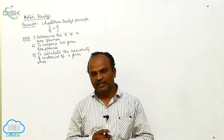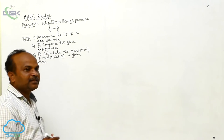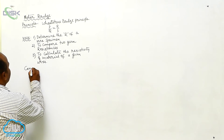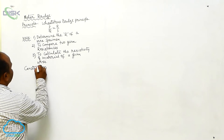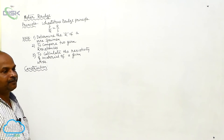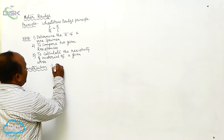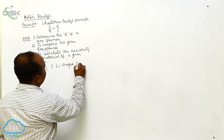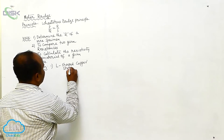The meter bridge is the device used to determine the resistivity of a conductor. Now, what is the construction? To construct the meter bridge, you require L-shaped copper strips.